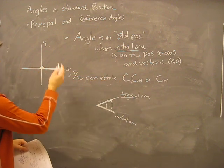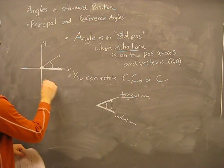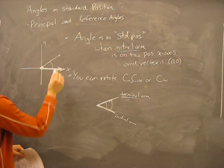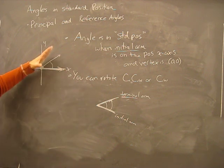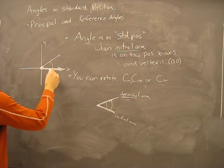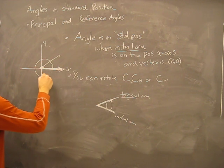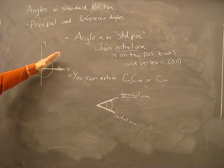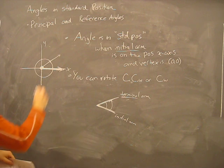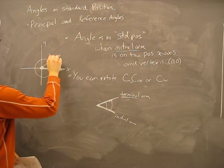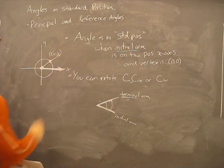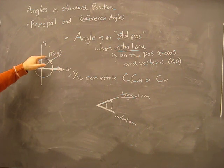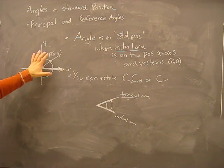Let's draw an angle. There we have an angle. Here is our initial arm, here is our terminal arm — it is where the angle terminates. If we were to draw a circle around here, the terminal arm will always have a point on it where it's going to cross the circle somewhere, right here. So just remember that for now.